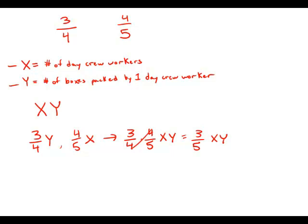We want the total number of boxes packed by everyone. So that is XY plus three-fifths XY. And we have to find a common denominator, so we'll make this five-fifths. And this will add up to eight-fifths XY.